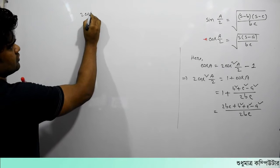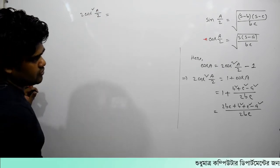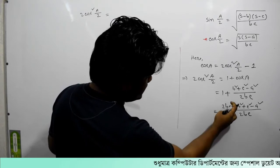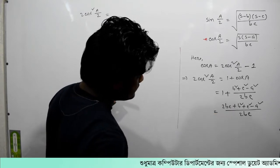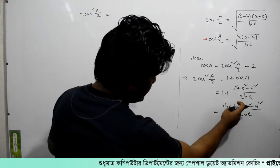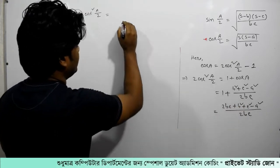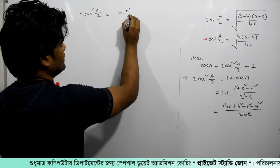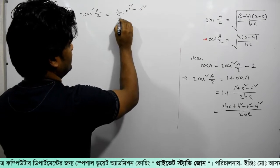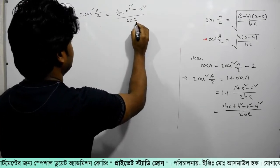2 cos²(a/2) equals... 2bc plus b² plus 2bc plus c², meaning we're going to write (b + c)² whole square, minus a², divided by 2bc.